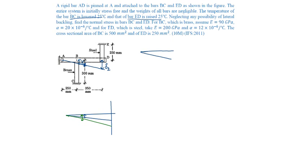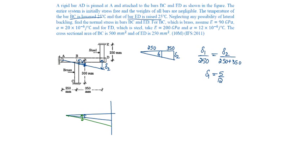We can find the relation between delta 1 and delta 2. This is delta 1 and this is delta 2. This is 250 and this is 350. From similar triangles, delta 1 by 250 is equal to delta 2 by (250 plus 350), giving delta 1 equal to 5 by 12 of delta 2.